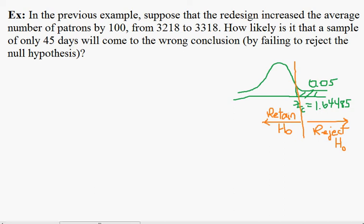This is an example of a Type II error that the null hypothesis is indeed false and the population mean has increased, but we make the wrong decision by deciding to retain the null hypothesis.